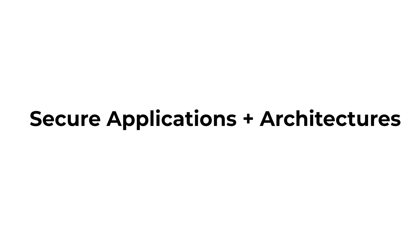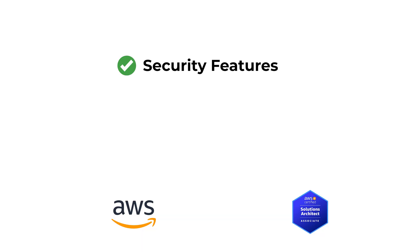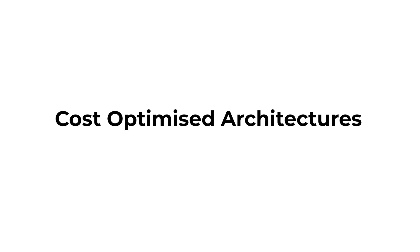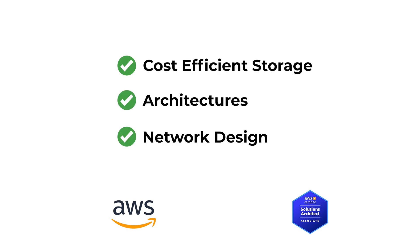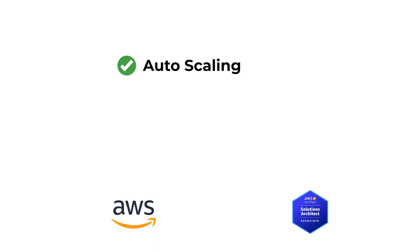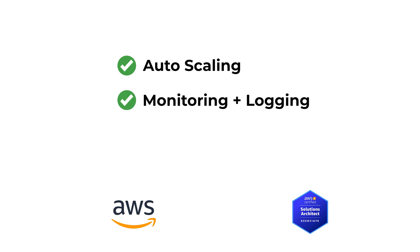Thirdly, we've got specified secure applications and architectures. This is where you are tested on your knowledge of AWS security features, secure application tiers, and IAM configurations. Next, we also have design cost-optimized architectures, which emphasizes designing cost-efficient storage solutions, architectures, and network design. We also have define operationally excellent architecture — this is about having knowledge about auto-scaling, monitoring, logging solutions, and infrastructure as code.